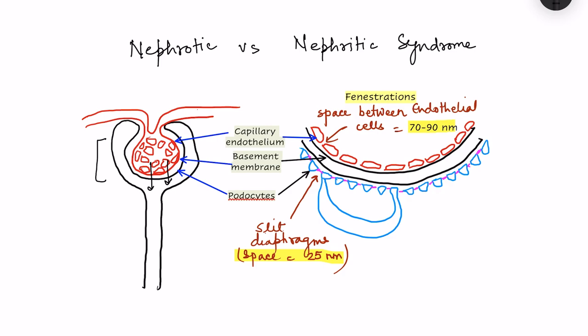The first layer is formed by capillary endothelial cells — the cells lining the capillaries that form the glomerulus. Beneath these endothelial cells lies a layer of basement membrane. The third layer consists of epithelial cells, which are of two types.